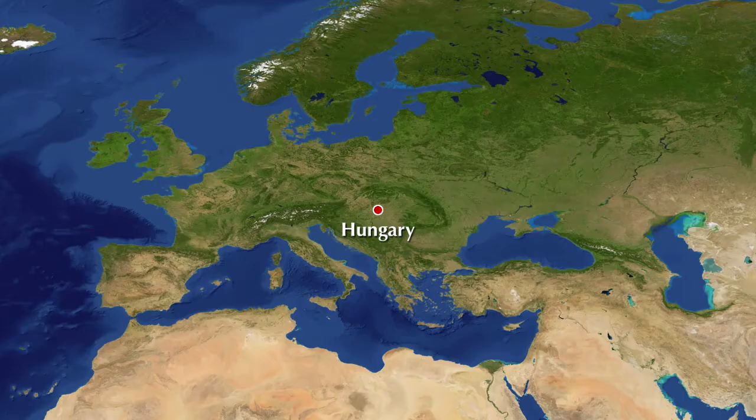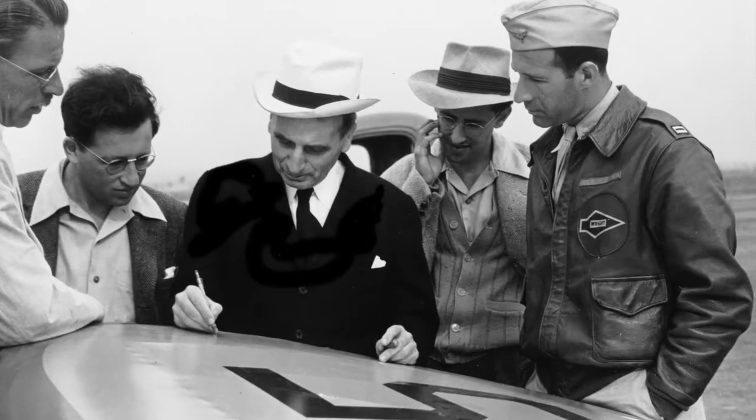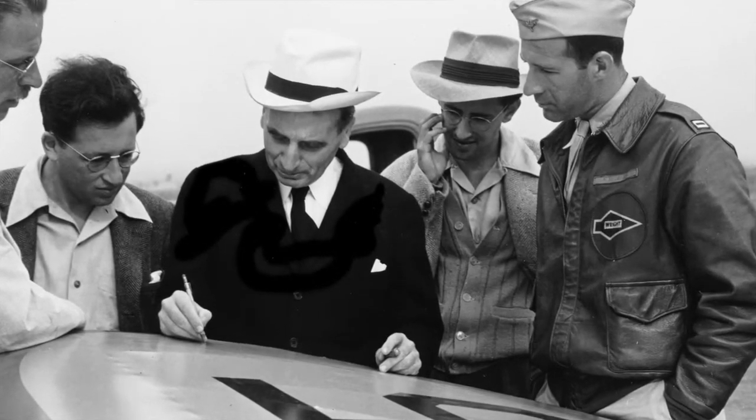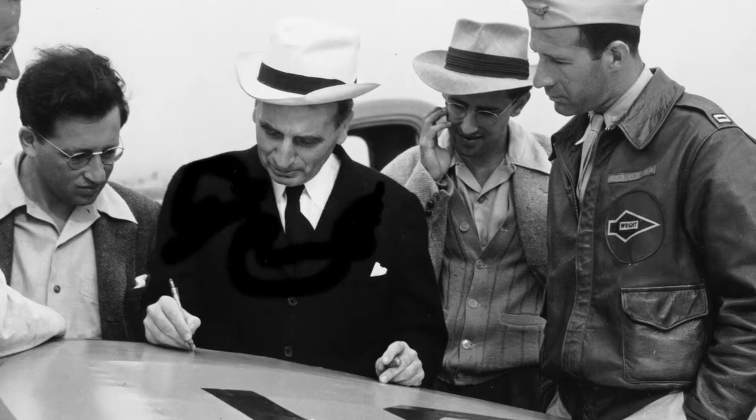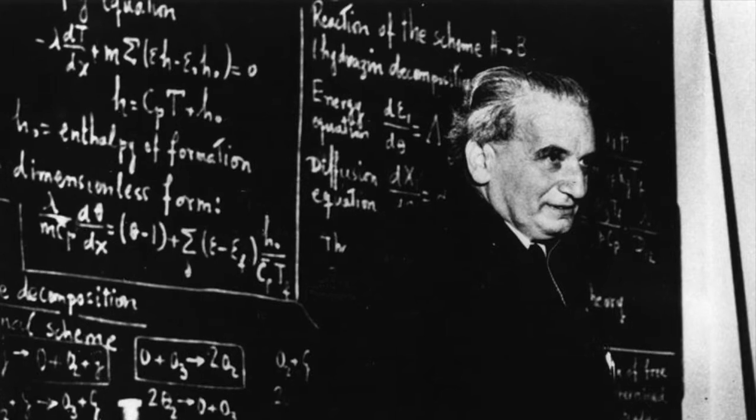All thanks to Theodor von Kármán. He was a Hungarian-American engineer and physicist, born in 1881, who made important contributions in the field of aeronautics and astronautics. He discovered that at a particular Reynolds number, something spectacular happens.